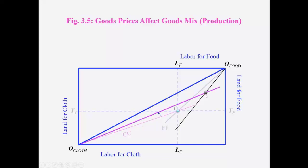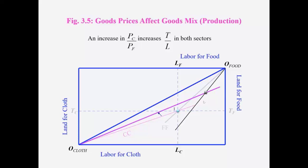And hence the output of cloth sector increases. What happens as a result is that the output of both the sectors change such that cloth increases and food decreases.